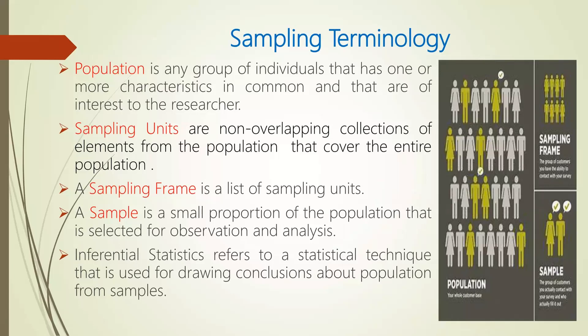A sampling frame is the list of sampling units. If there are 1000 white people and 1000 black people, and I take 200 white and 200 black, that is the sampling frame. A sample is the small proportion of the population selected for observation and analysis. You are not going to observe the whole population — just some small part. In the figure, you can see the whole population, then the sampling frame, then the selected individuals.